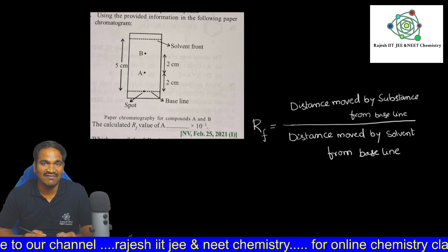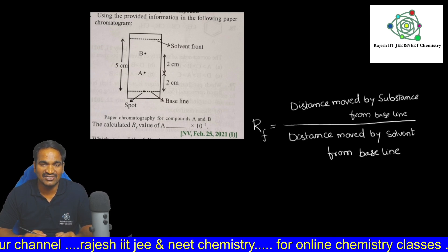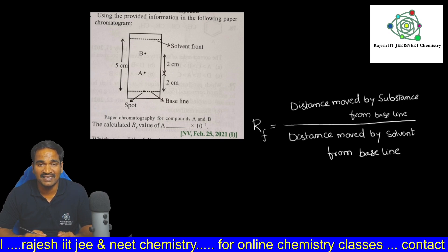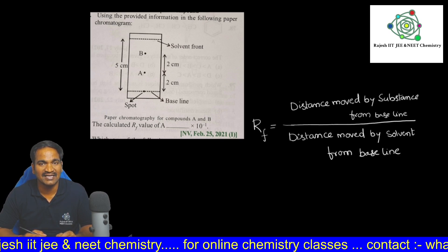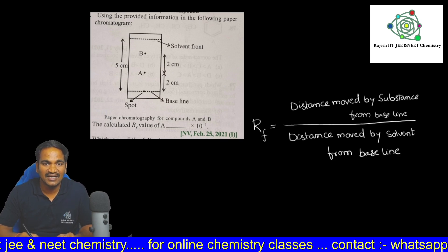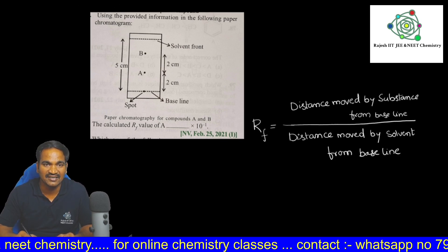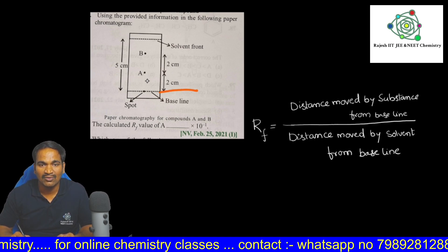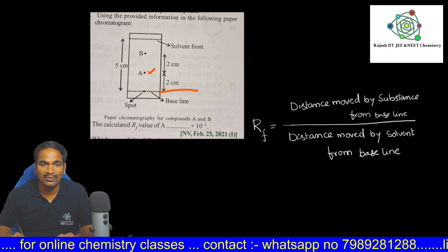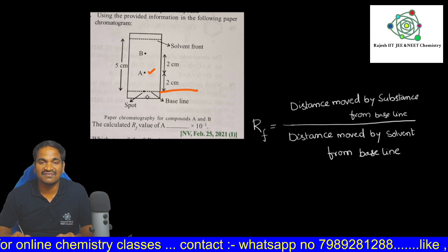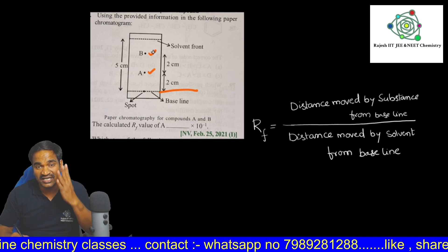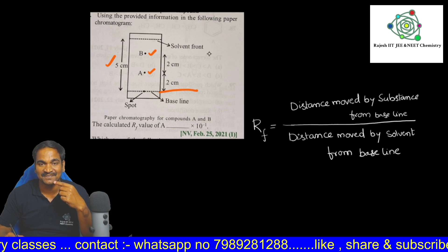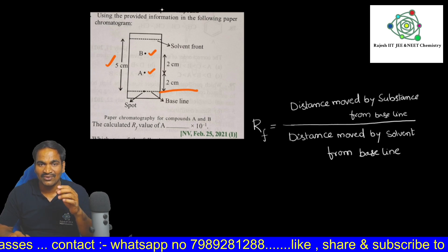First, you need to have clarity on the RF formula — retardation factor formula: distance moved by substance from the baseline divided by distance moved by solvent from the baseline. Here, the baseline is this line. From the baseline, substance A moved 2 centimeters, substance B moved 4 centimeters, and the solvent moved 5 centimeters.